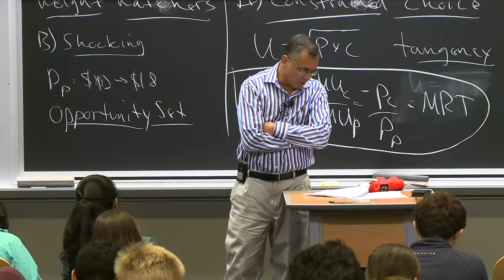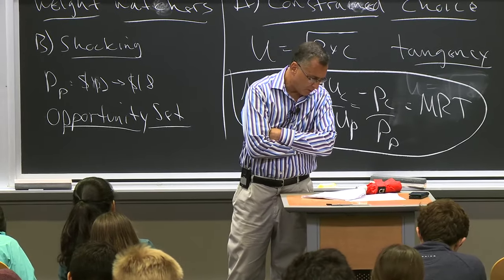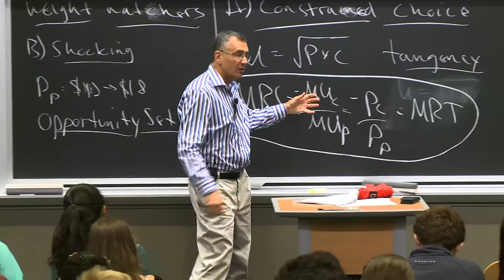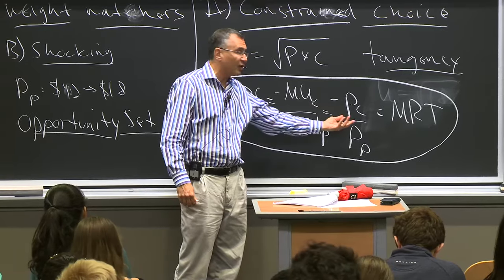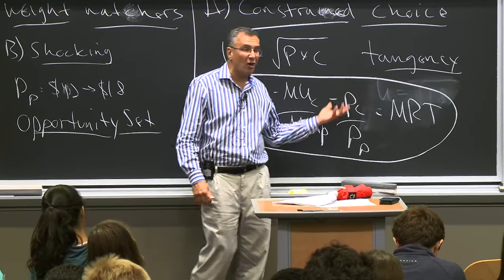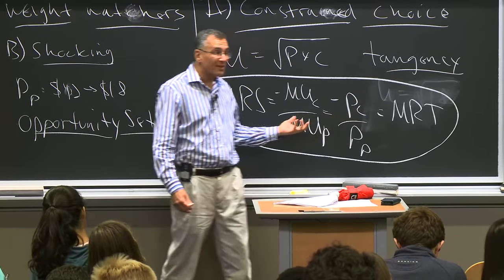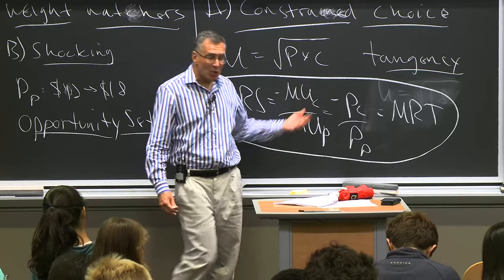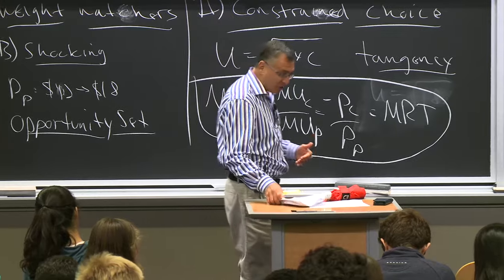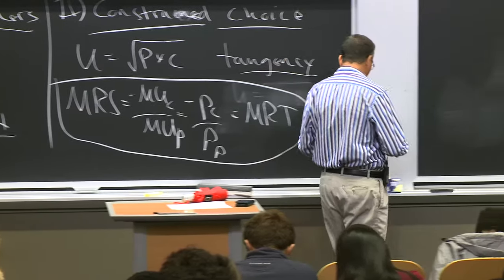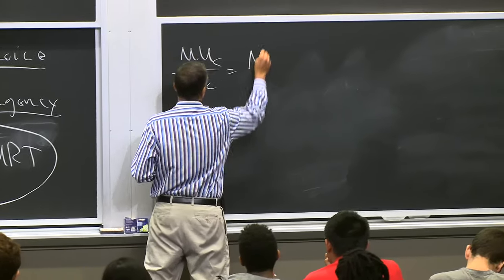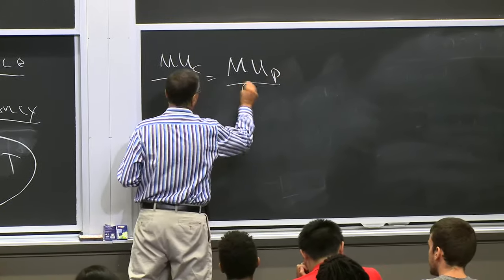This is the fundamental equation of consumer choice. If you understand it, you can solve virtually every consumer choice problem. At the optimum, the ratio of marginal utilities equals the ratio of prices — the rate at which you want to trade off pizza for cookies equals the rate at which the market will allow you to. You can rearrange this as MU_C / P_C = MU_P / P_P — the bang-for-the-buck equation: marginal happiness per dollar should be equal across goods.